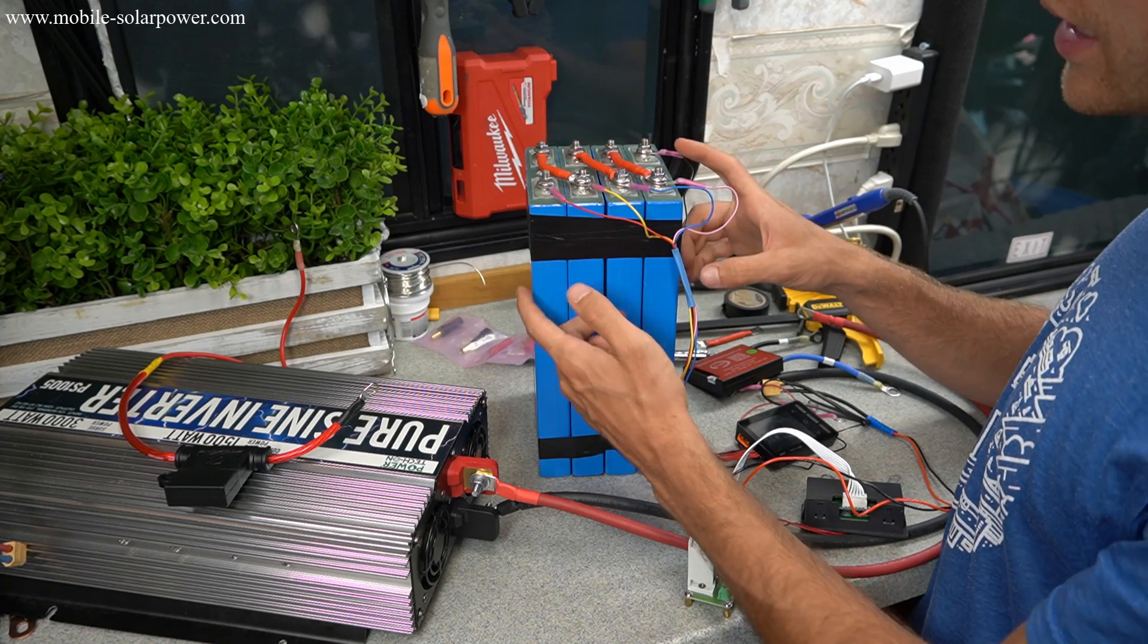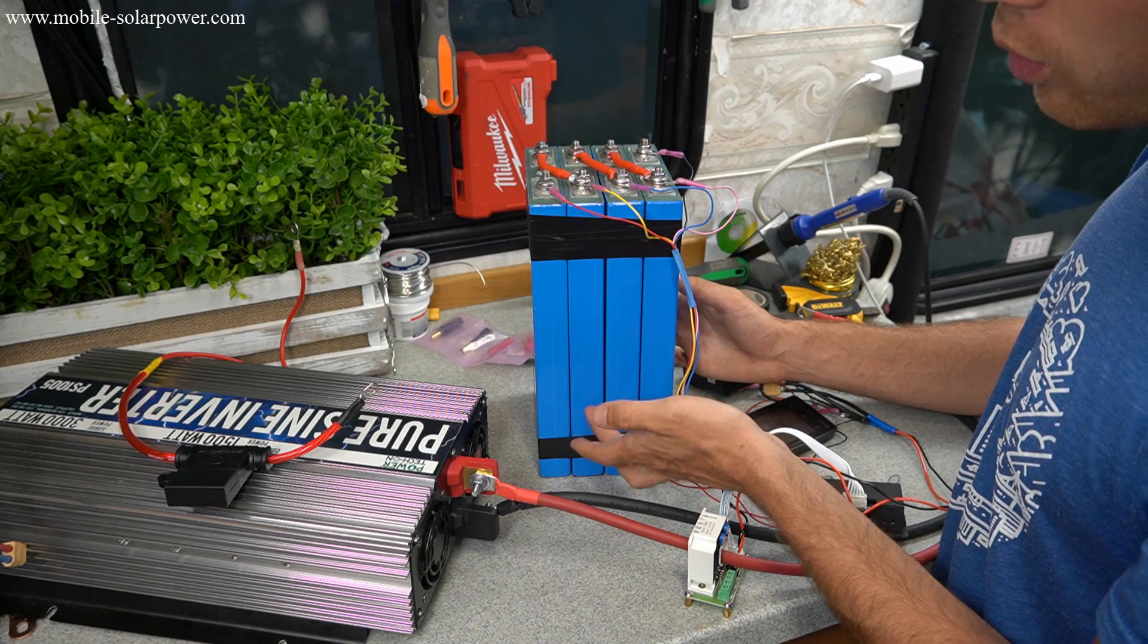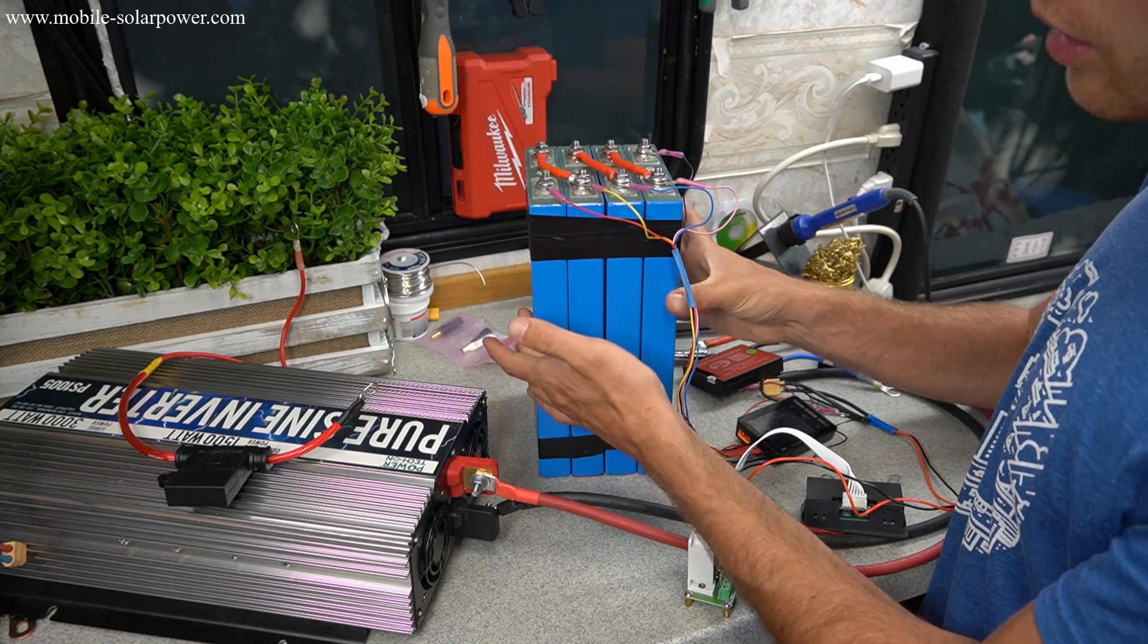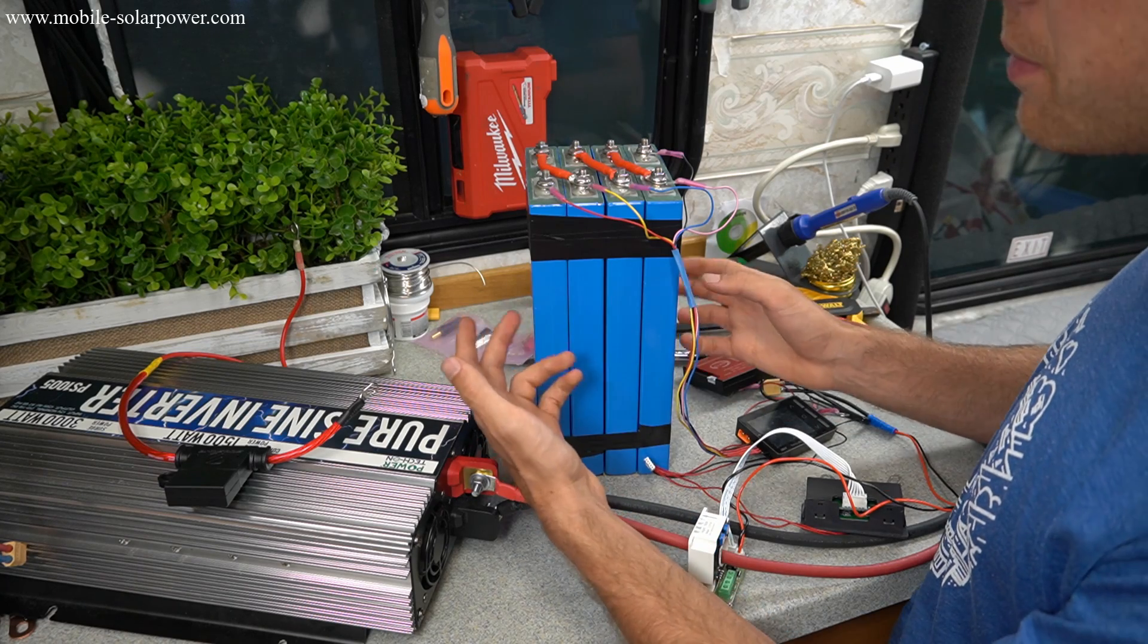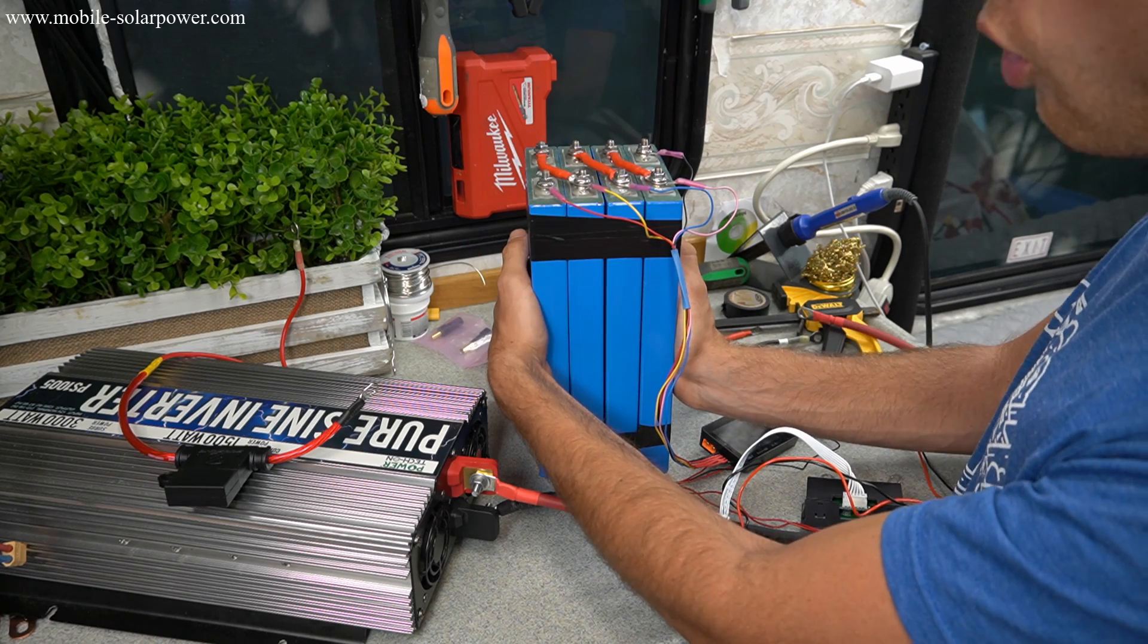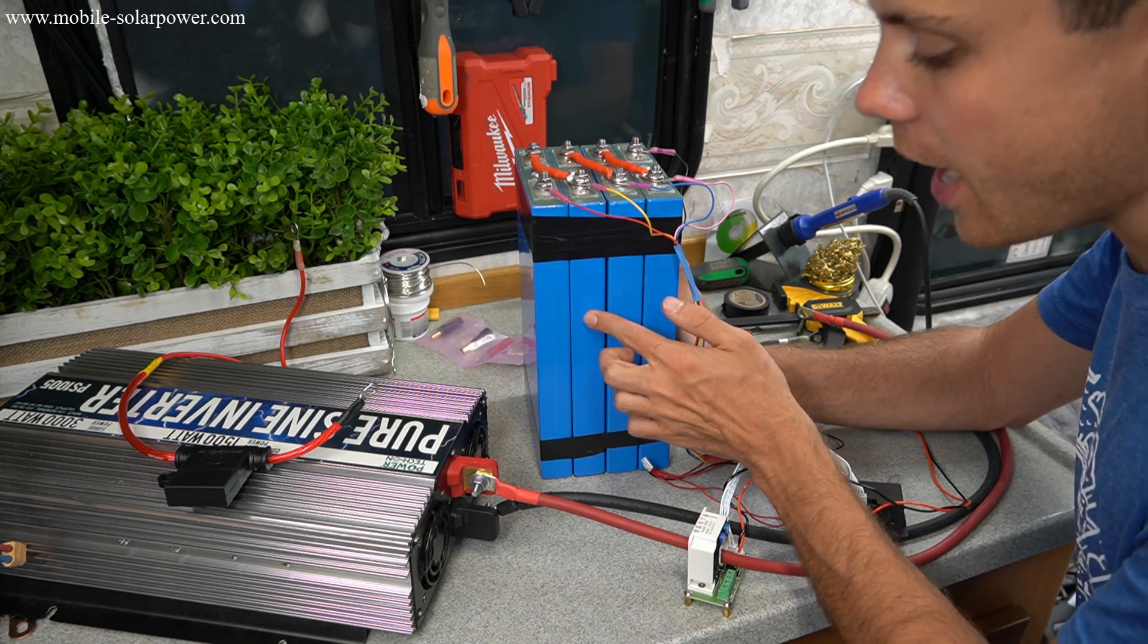And the reason that we do a capacity test is it will tell us how well these cells are matched and their overall health. So if one of the cells has lower capacity than the other ones, we will see it on the test, because the capacity of all of these cells is determined by the lowest capacity cell. So if all of them are good, then the pack as a whole will work really well in our capacity test. If one of them is bad, then our capacity test will have bad results.